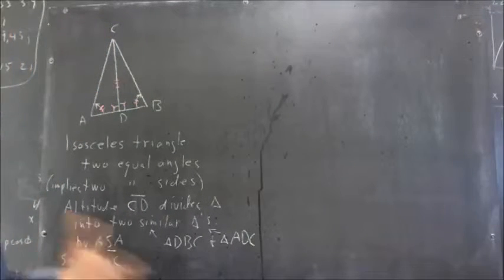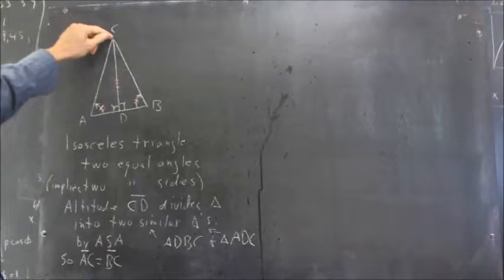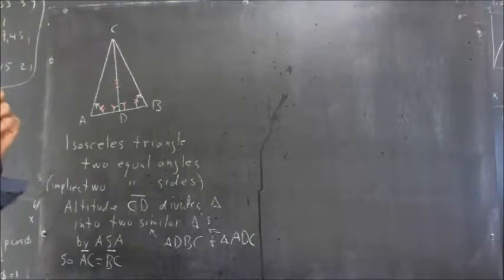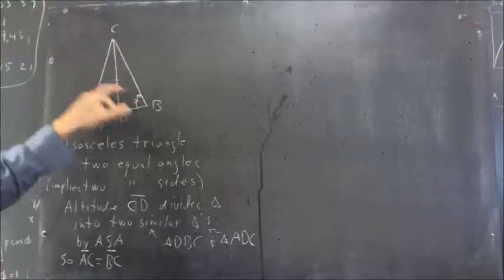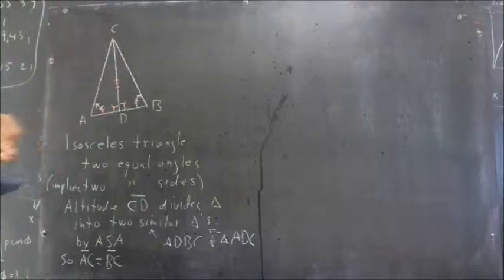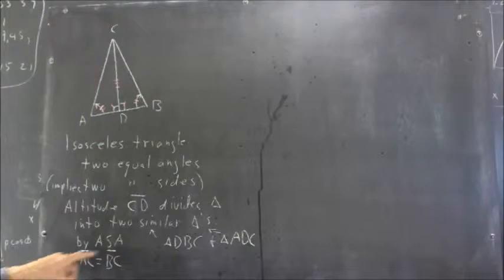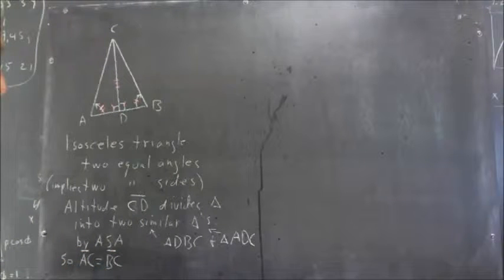And do we have the same scale? Well, yeah, the side CD is common to both triangles and is opposite the two known angles here. So that the two triangles, therefore, by angle side angle have to be congruent.